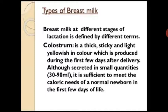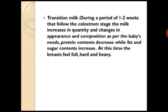Colostrum is a thick, sticky, light yellowish fluid produced during the first few days after delivery. It is secreted in small quantities — 30 to 90 mL — which is sufficient to meet the caloric needs of a normal newborn in the first few days of life. Transitional milk: during the period of one to two weeks following the colostrum stage, milk increases in quantity and changes in appearance and composition as per the baby's needs. Protein content decreases while fat and sugar content increase, and at this time the breast feels full, hard, and heavy.